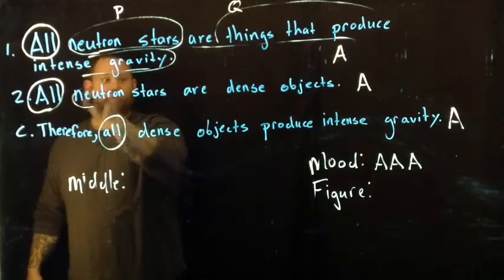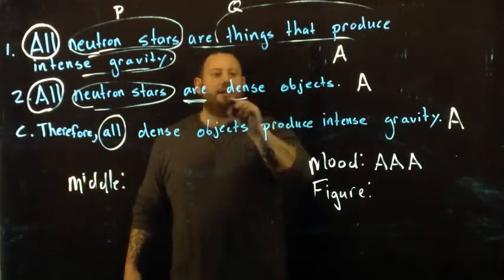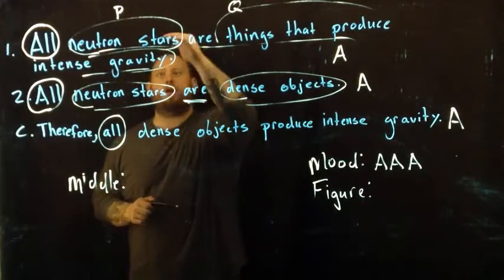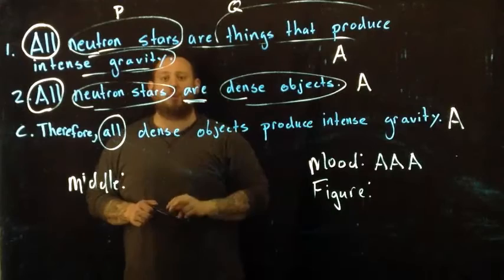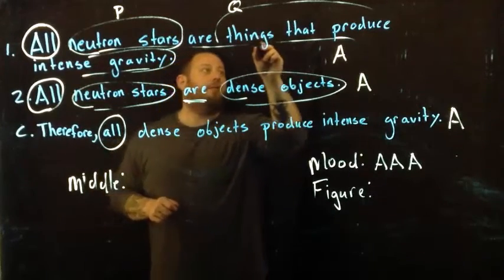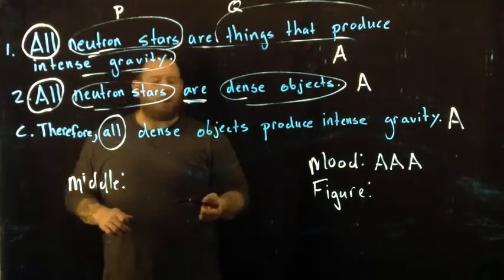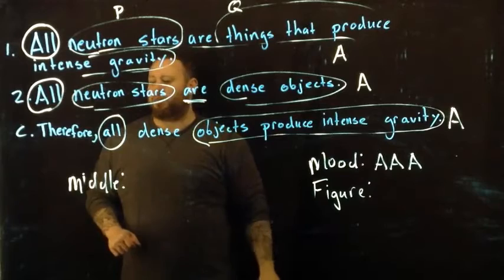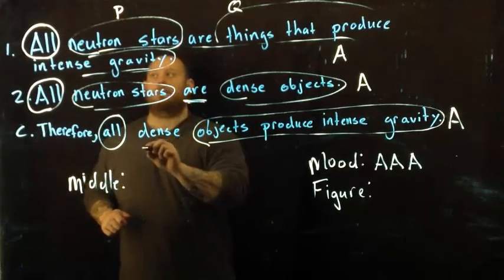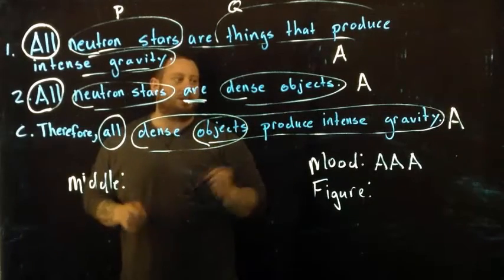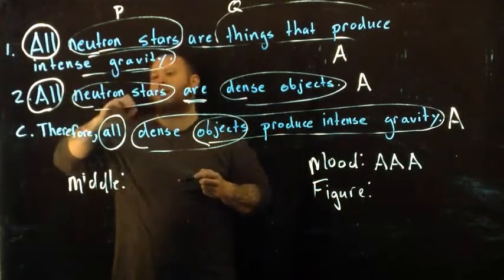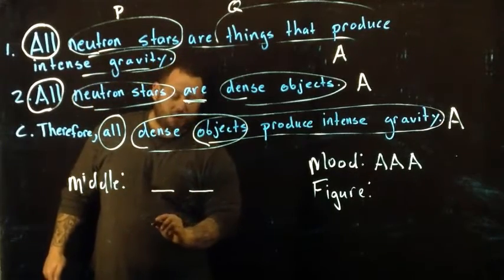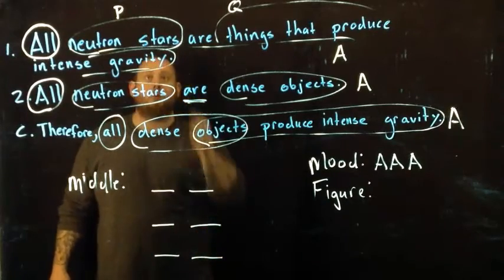We have all neutron stars, term R, and dense objects. We're looking for which two terms show up in our first and second premises but not in the conclusion. 'Things that produce intense gravity' shows up in the concluding statement, so that's not the middle term. 'Dense objects' also shows up in our conclusion. So the term that doesn't show up in our conclusion but appears in both premises is 'neutron star' — that is our middle term.